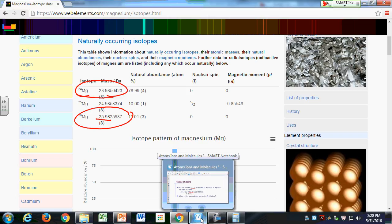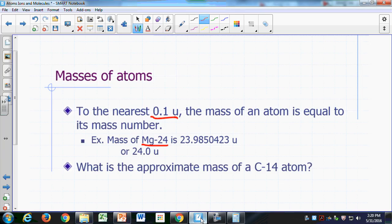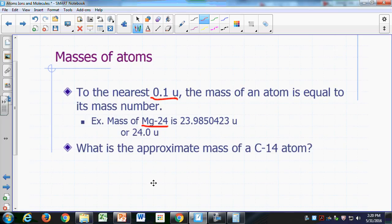So what would be the approximate mass of a carbon-14 atom? 14.0. 14.0 atomic mass units.